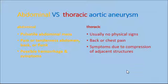Abdominal is more common than thoracic. Thoracic is more common in men. As you can see with the thoracic, usually there are no physical signs. The signs usually come with pressure on a surrounding area. It can be in the ascending, transverse, or descending aorta.